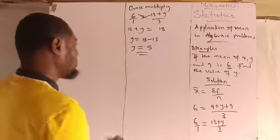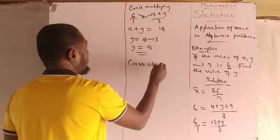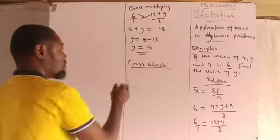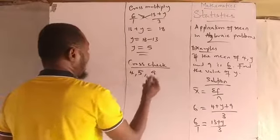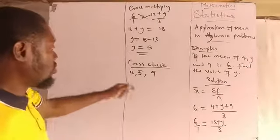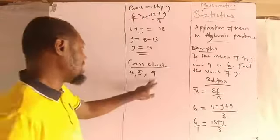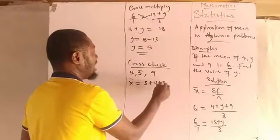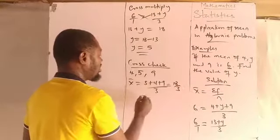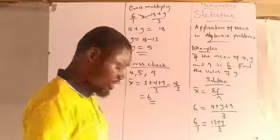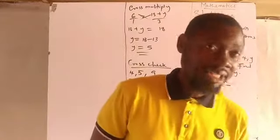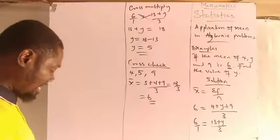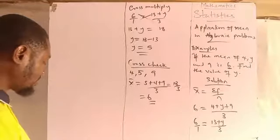We can cross-check our answer. Since y is 5, the original distribution is 4, 5, and 9. Finding the mean: 5 plus 4 plus 9 over 3 equals 18 over 3, which gives us 6 — exactly what was given in the problem. So our answer is correct.